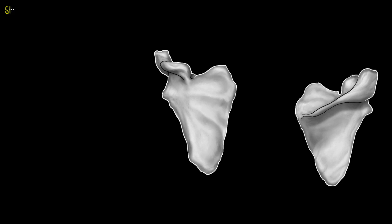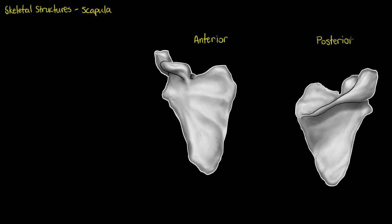Welcome to this skeletal structure video where we are looking at our scapula and learning how to name and distinguish all the features associated with it. Let's start with directional terminology. We're going to have the scapula viewed from its anterior aspect, as if we were looking from the front of the body, and also the posterior aspect, as if we were looking from behind.